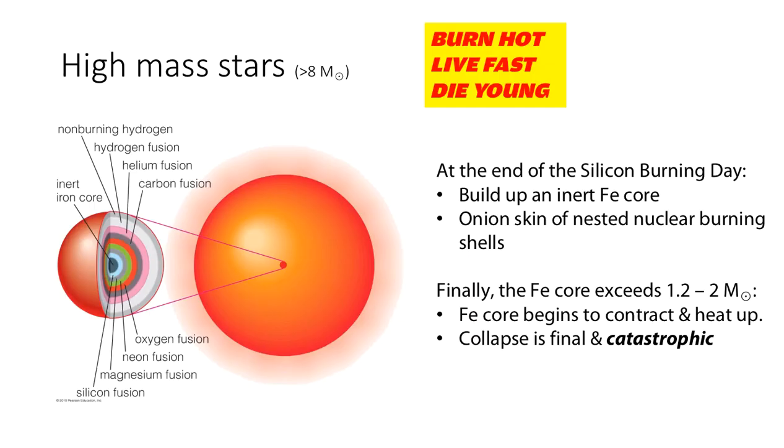So at the time, at the end of the silicon burning day, we've built up an inert iron core, and above that, an onion skin of nested shells. So magnesium, silicon, magnesium, neon, oxygen, carbon, helium, hydrogen, fusion. Above that, we still have a very large envelope of non-burning hydrogen that still remains.